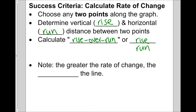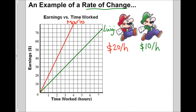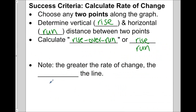Note that the greater the rate of change, the steeper the line. Going back to Mario — he earned $20 per hour and Luigi only earned $10, so Mario has a greater rate of change. Looking at the graph, Mario's graph is steeper than Luigi's. Mario is earning money faster, so his line goes up faster. The greater the rate of change, the steeper the line.